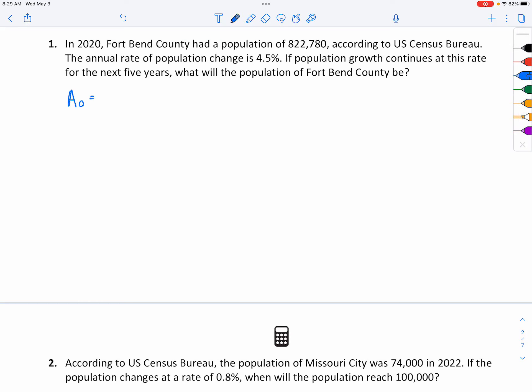your initial amount will be 822,780. Your rate is going to be 4.5%, but you change it to decimal. The time concern here will be five years.